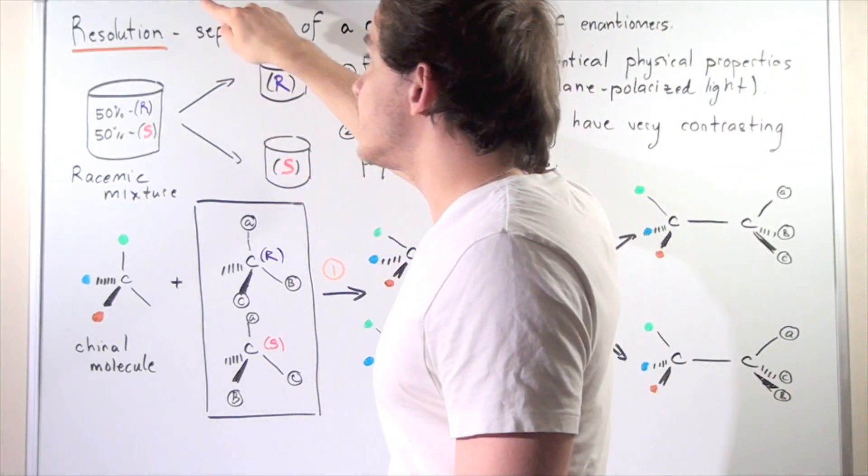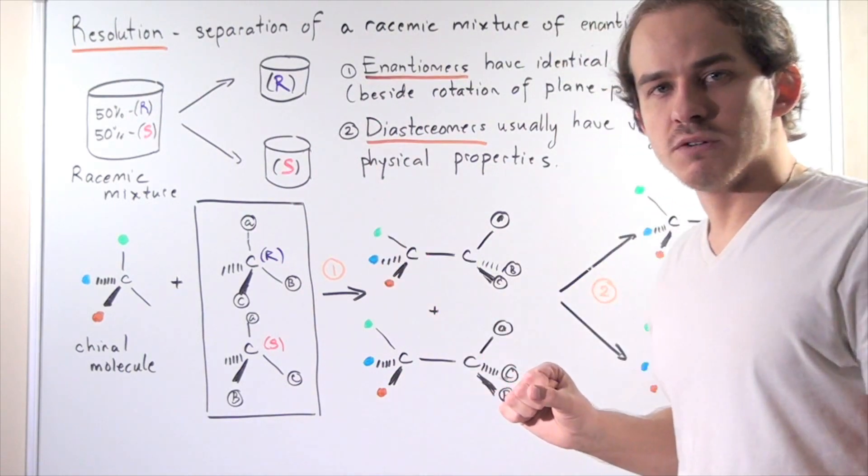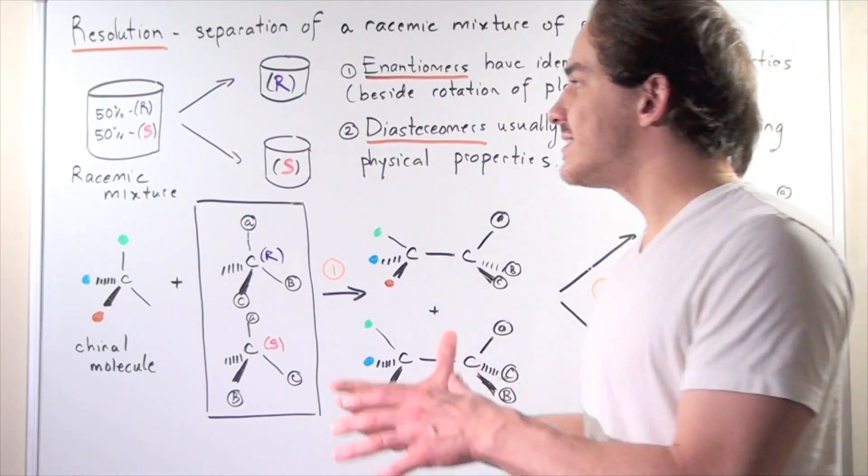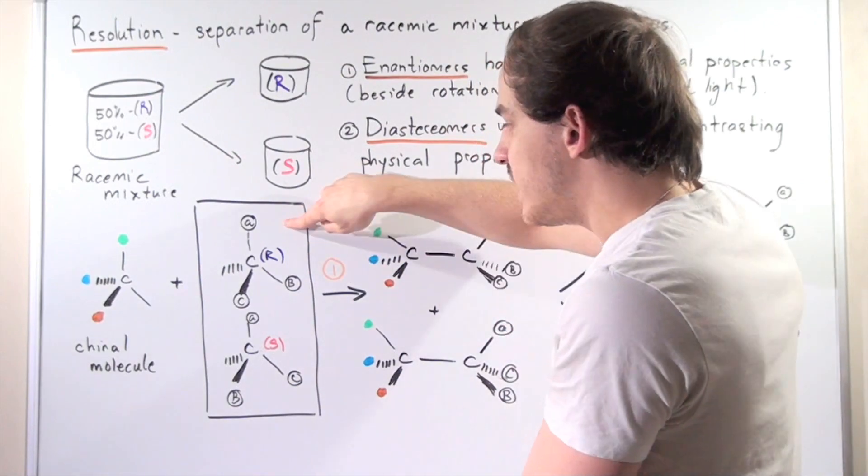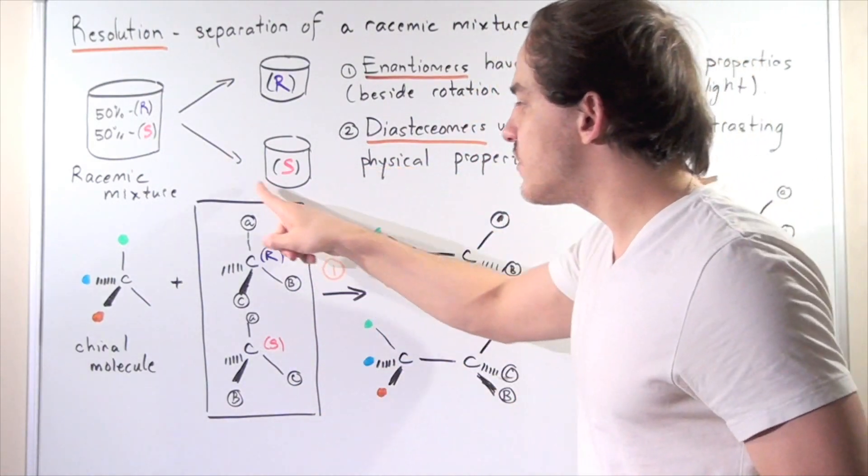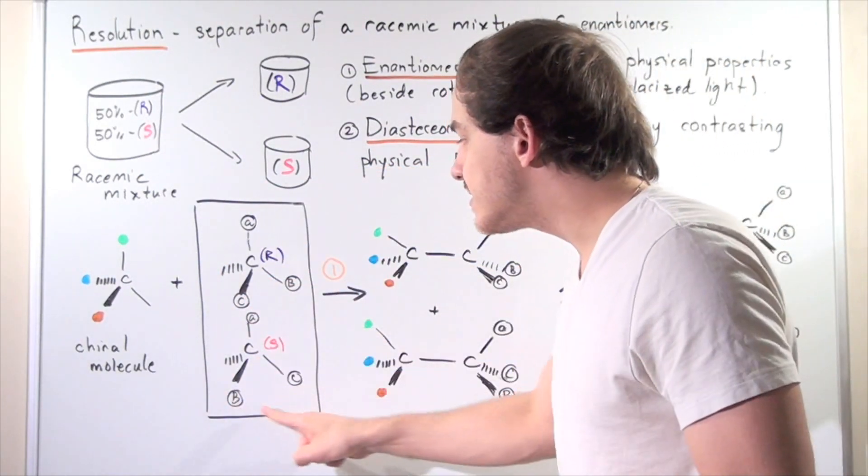Let's begin our discussion on the steps of resolution. Your first step is to take your racemic mixture. Here we have our racemic mixture - we have the R enantiomer and the S enantiomer.